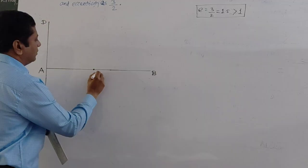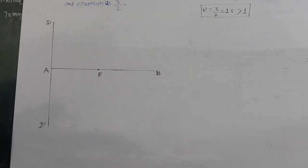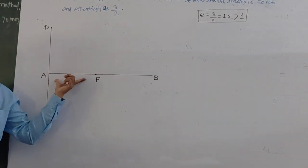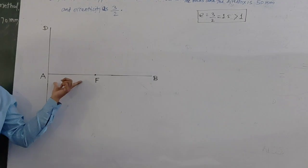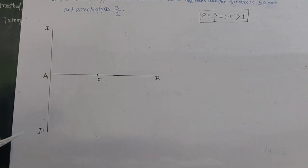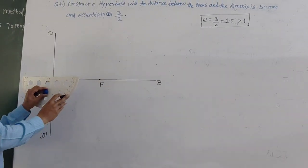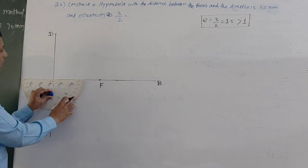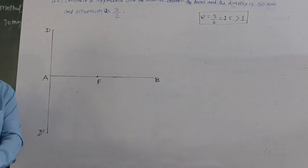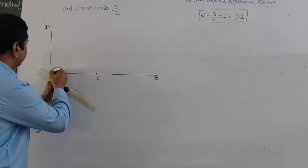This point F is your focus. Next step: divide line AF into 5 equal parts. To divide it, we use the standard method in engineering graphics — place the protractor on A and take an angle of 30 degrees, then draw a line at that angle.